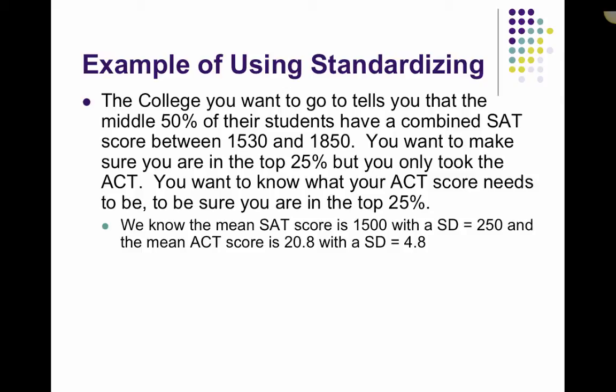So we're told that the mean SAT score is 1500 with a standard deviation of 250. And the mean ACT score is 20.8 with a standard deviation of 4.8. So we're going to need that. So the first thing that we have to do in this problem is determine how far above the mean you are to be in the top 25%. So remember you have to have a score of at least 1850. So that would be our observed score. Then we'd use our mean of 1500 and our standard deviation of 250. That will calculate our z-score and tell us how far above the mean we're going to have to be.